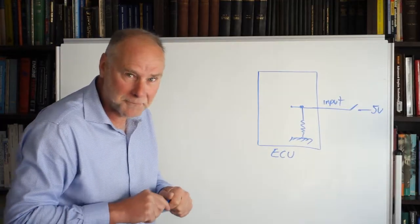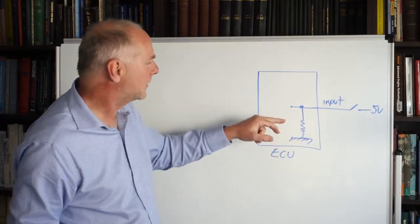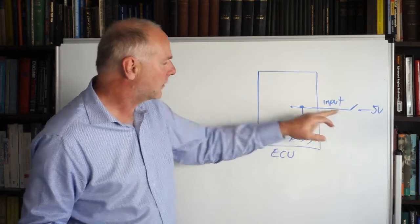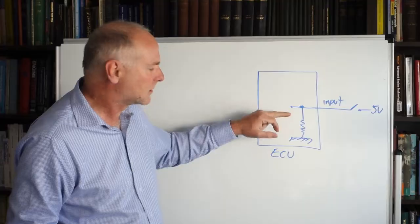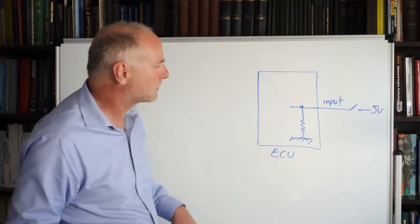Now you can see why sometimes we need a pull-down. If we're switching a voltage into the ECU, with it open, it's pulled down to ground. With it closed, it's pulled to five volts. So a pull-down resistor is connected to ground. A pull-up resistor is connected to a voltage supply.